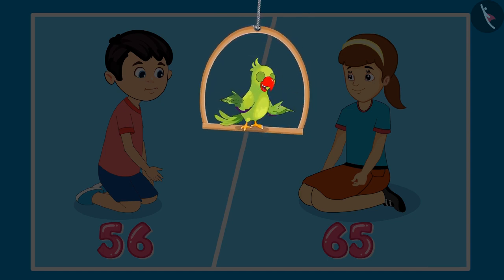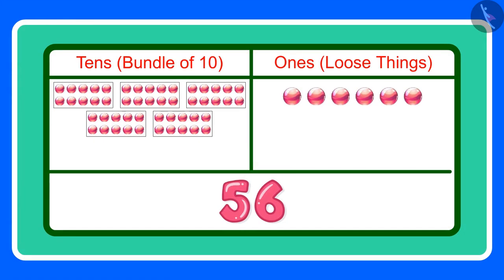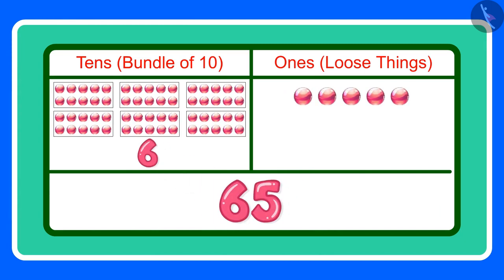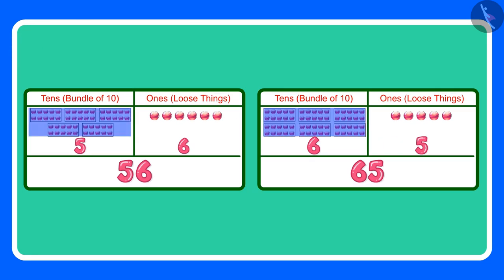Children, what do you think — are 56 and 65 equal? Let us see. 56 means five tens and six ones, and 65 means six tens and five ones. The two numbers have different tens and ones. This means that 56 and 65 are not equal. Children, can you tell me which number is greater between the two? Yes, correct — 65 is the greater number because it has more tens.